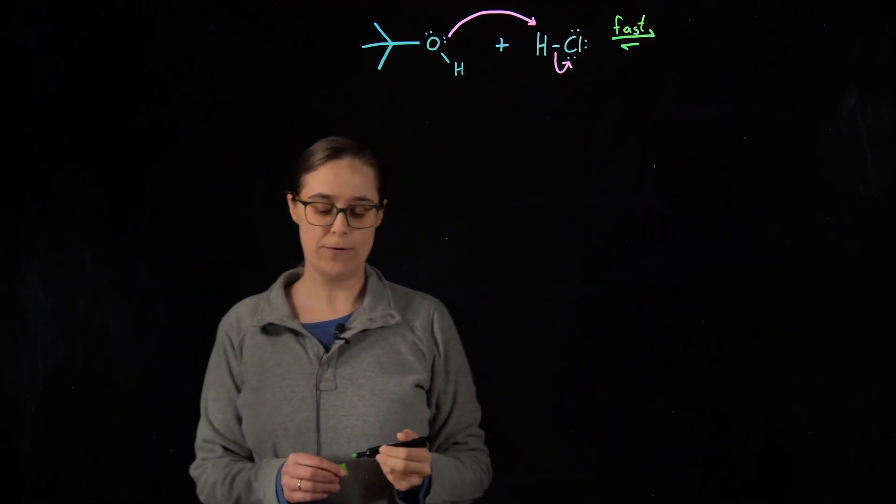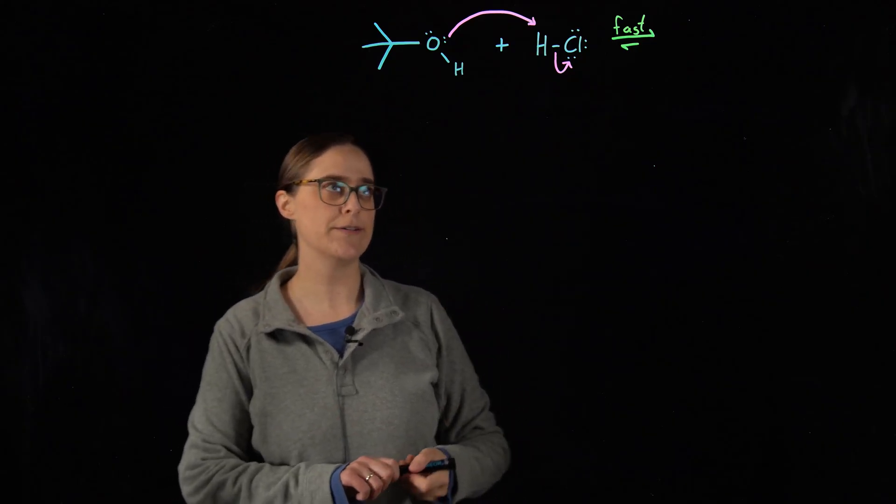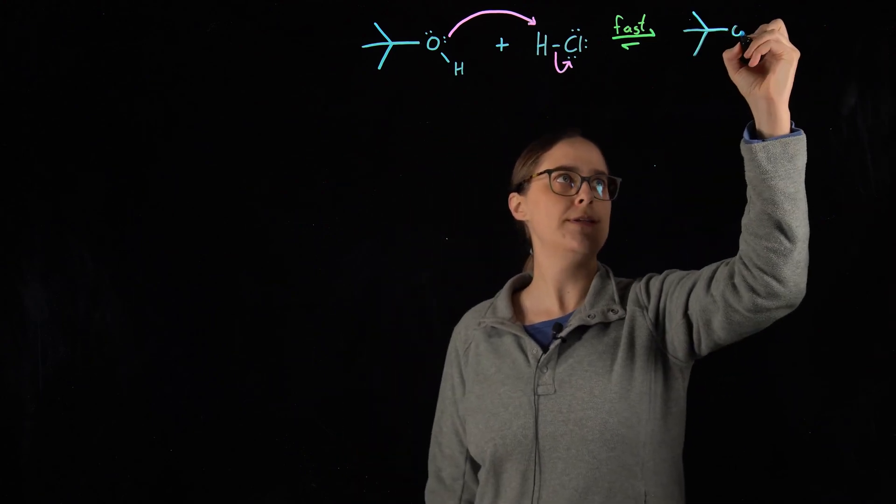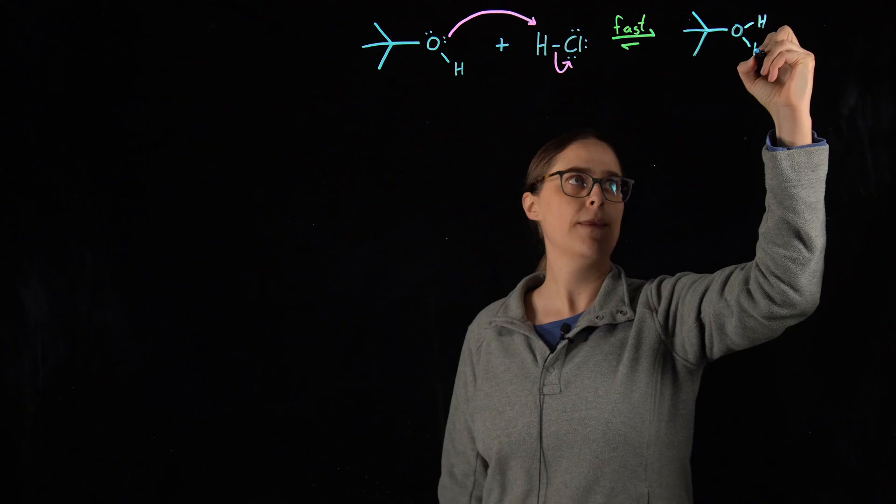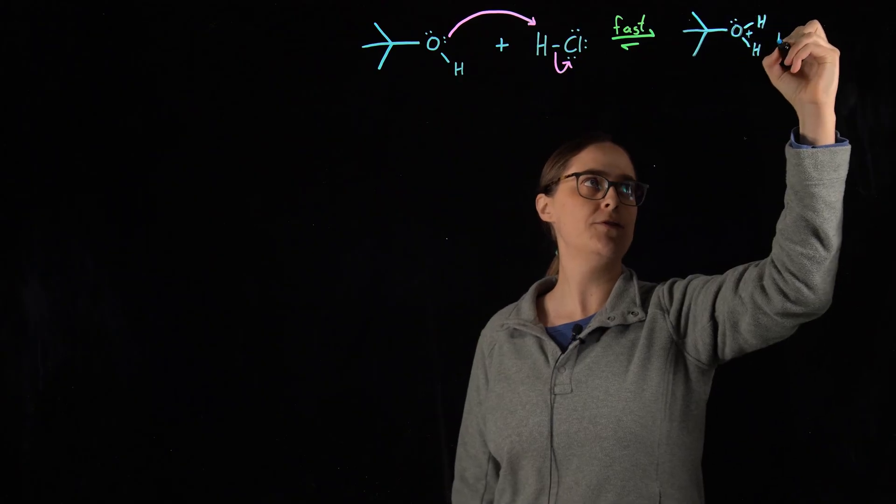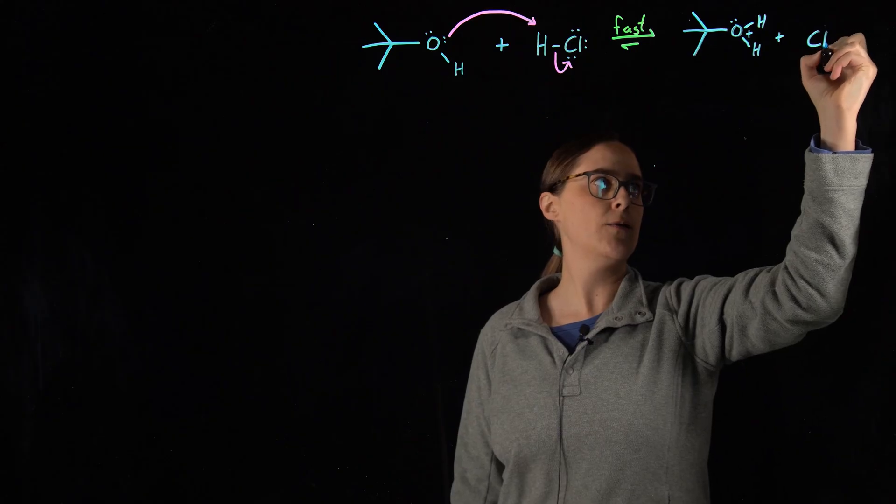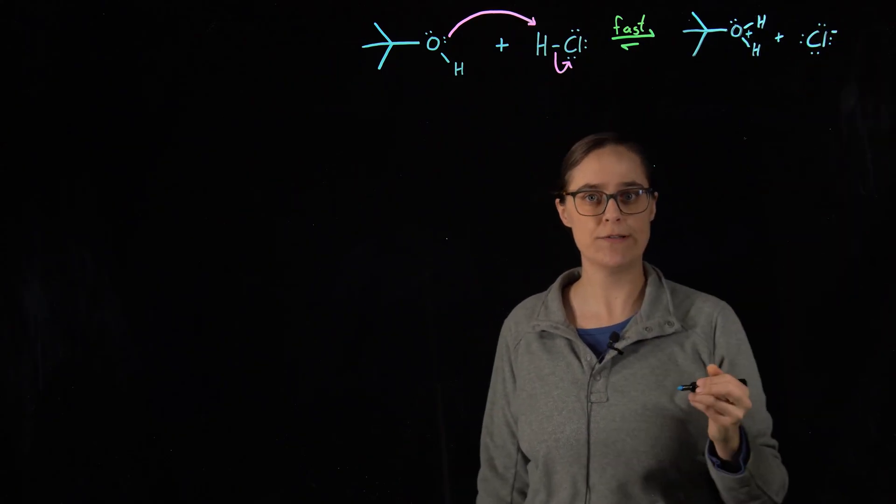Then we have our reaction arrow and we write the intermediate products of this very first step. So this oxygen is now bonded to two hydrogens. It has one lone pair of electrons and a positive charge.